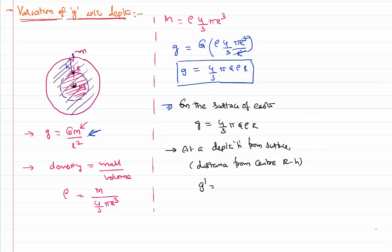New acceleration due to gravity, 4 by 3 pi remains same, G remains same, rho remains same, but the distance becomes r minus h. Dividing these two equations, g dash by g equal to everything else gets cancelled other than this r minus h and r. That is 1 minus h by r is g dash by g. That is g dash equal to 1 minus h by r into g.